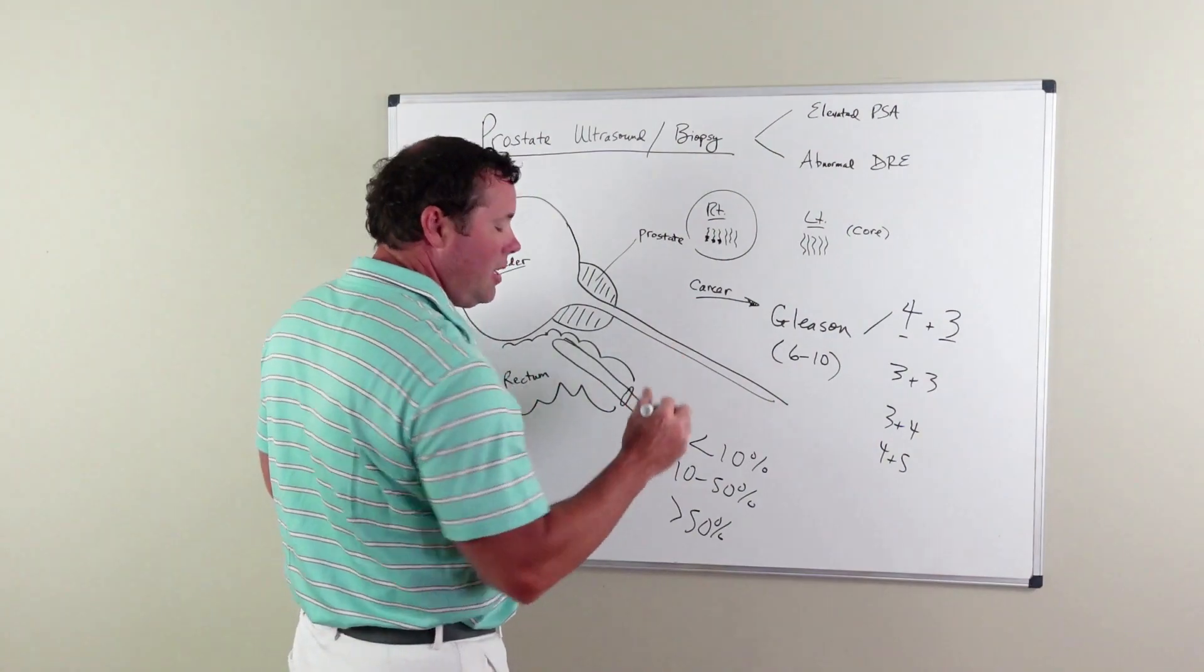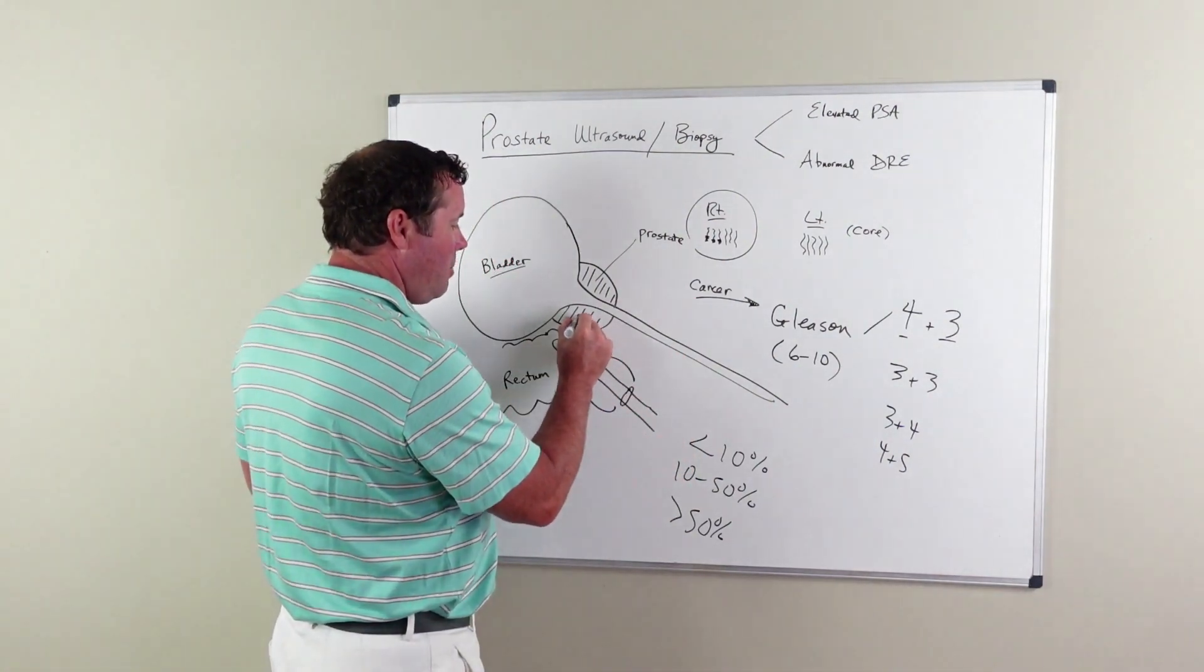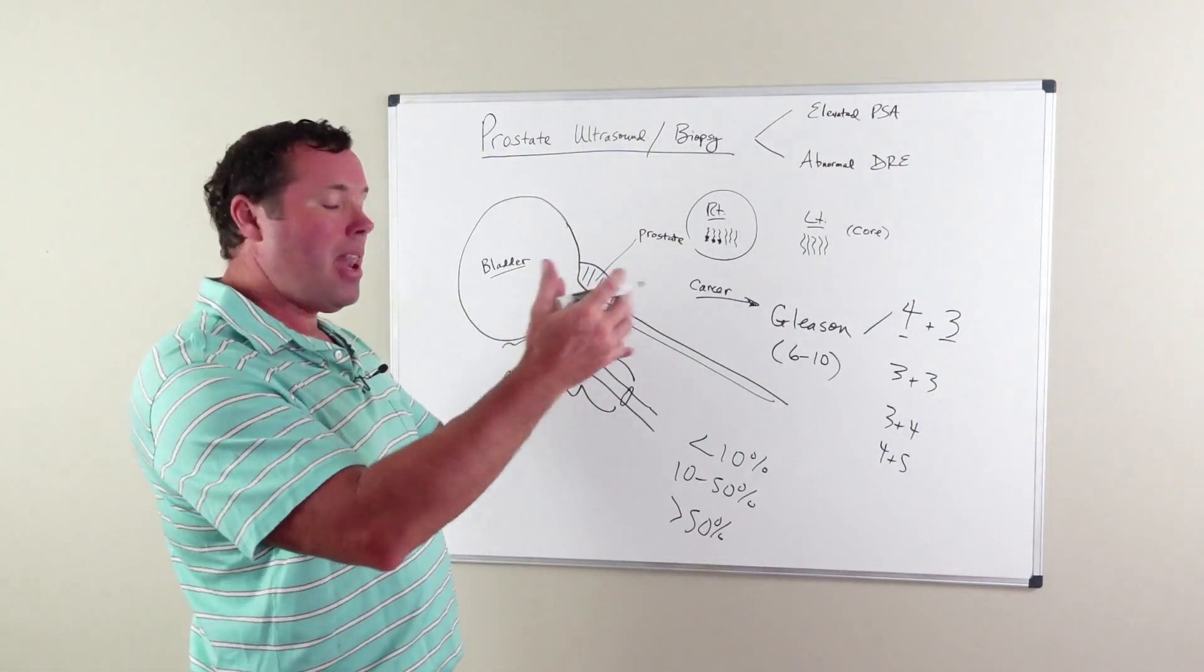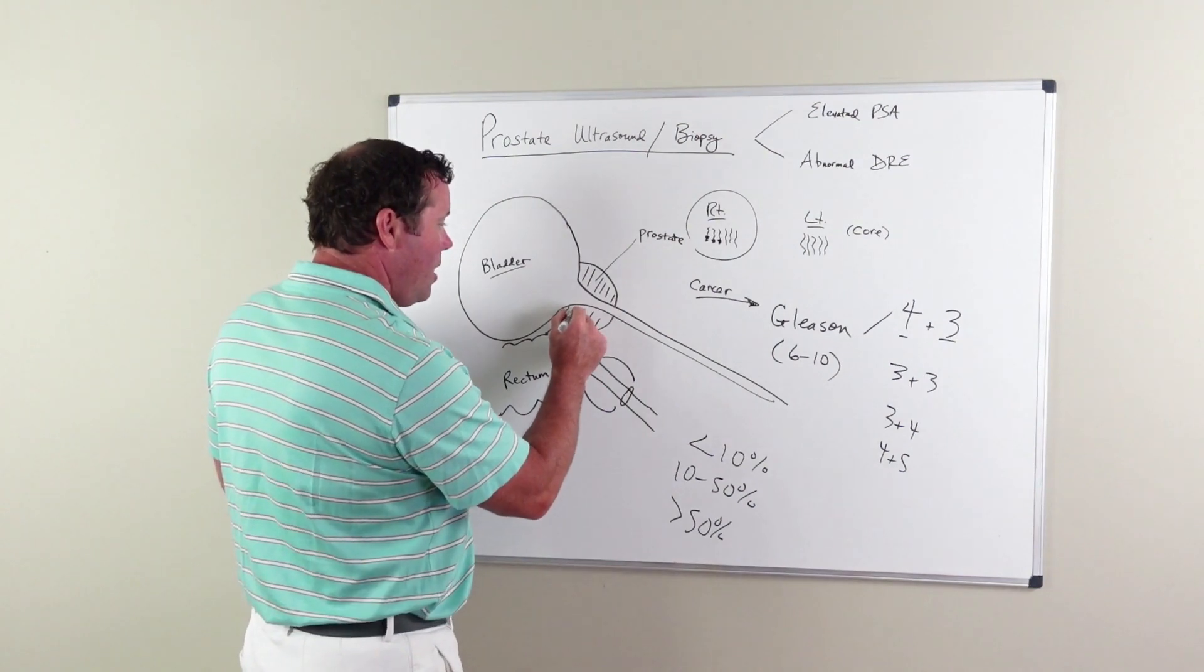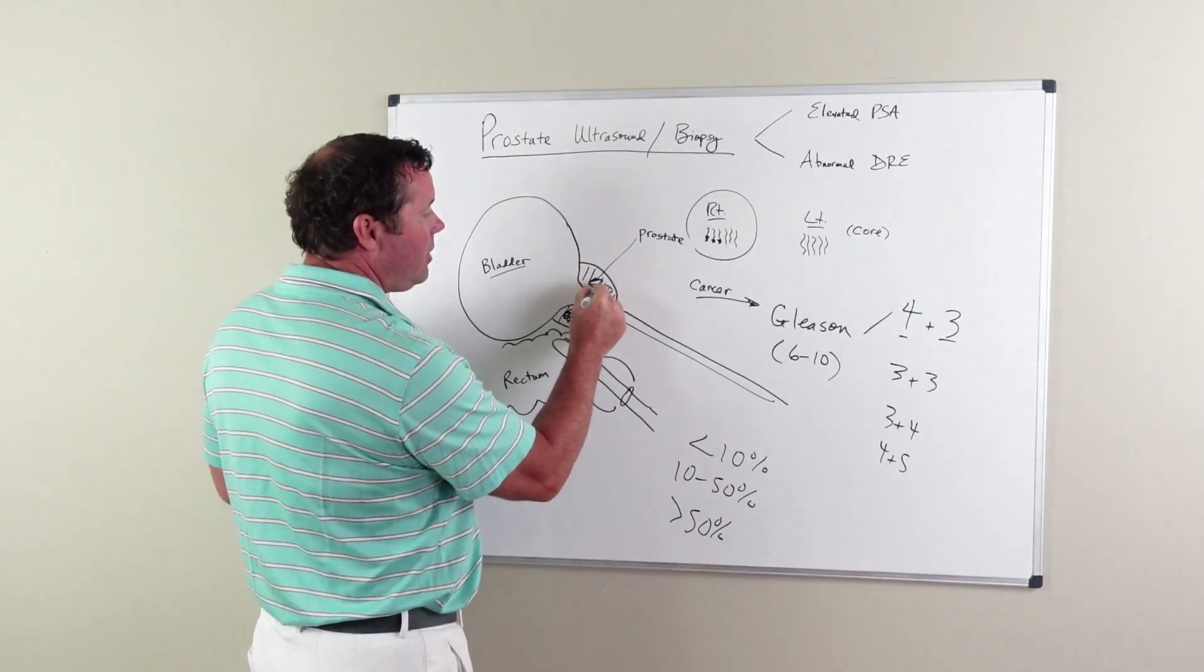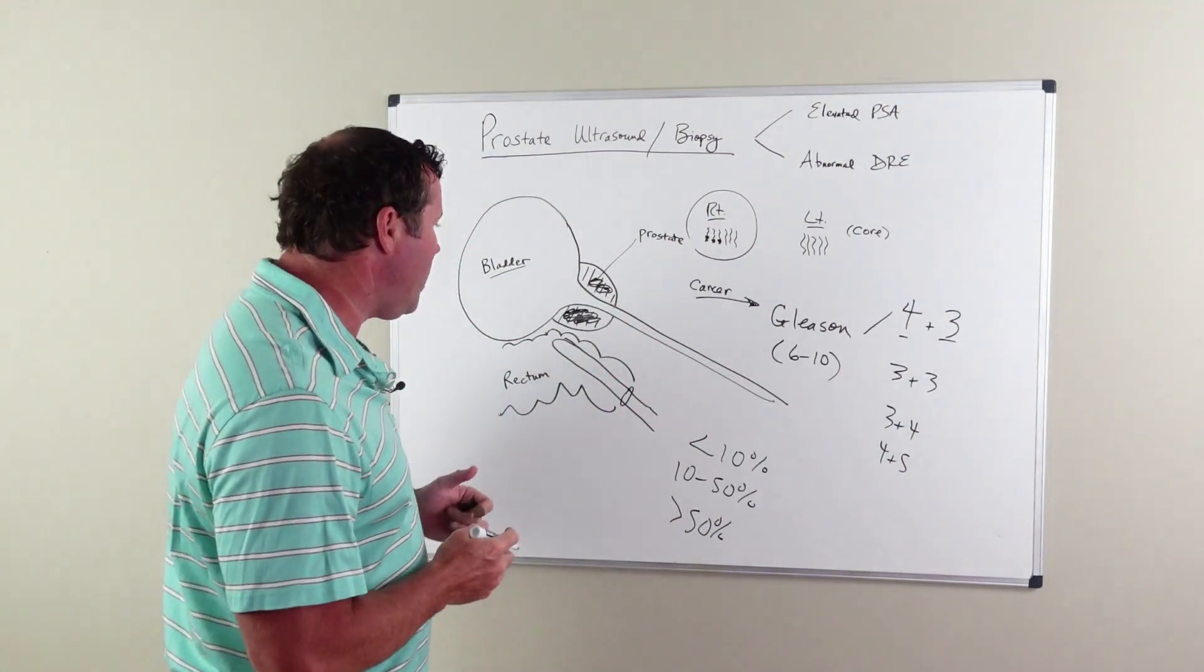That just shows you the volume of the cancer or the amount of cancer. In a biopsy that had 1 out of 12 cores positive, you would expect there to be a smaller cancer. In someone that had 10 out of 12 or 12 out of 12 specimens positive, you would expect that entire prostate to be cancerous. It translates into volume of cancer.